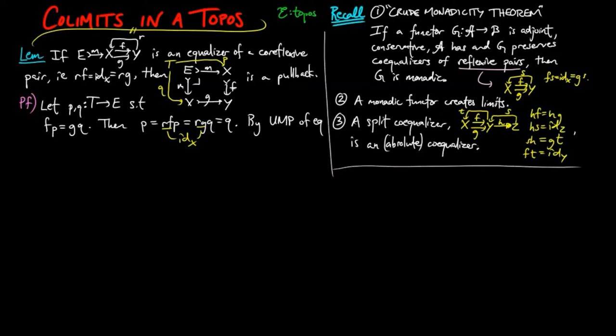Then by the universal mapping property of the equalizer, there exists this unique morphism H from T to E such that MH is equal to P, which is equal to Q, proving that the square is a pullback.